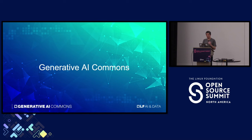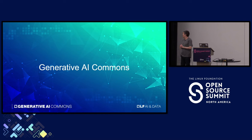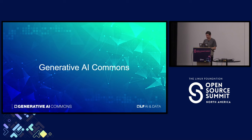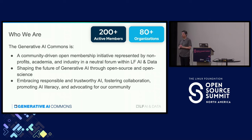Let's jump into the Generative AI Commons. The Generative AI Commons is a fairly new organization — everyone is talking about generative AI so we had to do it ourselves as well. We launched it in September, so only several months ago, and we already have more than 200 active member contributors to our activities across 80 organizations.